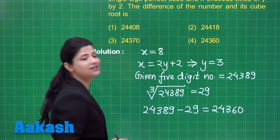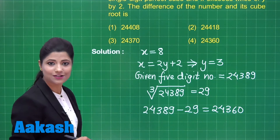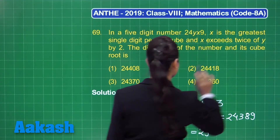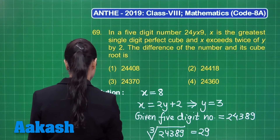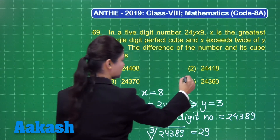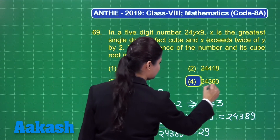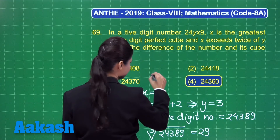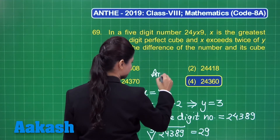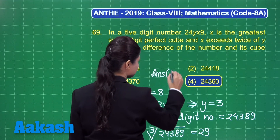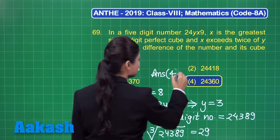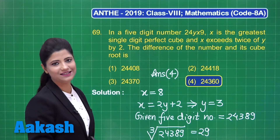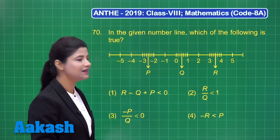So 24,360 is the required answer for this question. Out of the 4 options, option number 4 has the number 24,360, so the answer is option 4. I hope it is clear. Let us take up our next question.